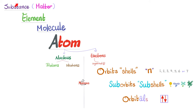Let's put everything together. The substance, or matter, includes elements, which are the simplest form of matter. Elements usually exist as molecules. Molecules are made of atoms. The atom is made of a nucleus — centrally — and electrons peripherally. The electrons are organized in orbits, or shells, followed by sub-orbits or sub-shells. Underneath, we have orbitals. The orbitals, or shells — that's the principal quantum number: first orbit, second orbit, third orbit, fourth orbit, etc.